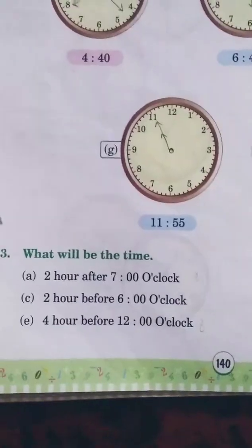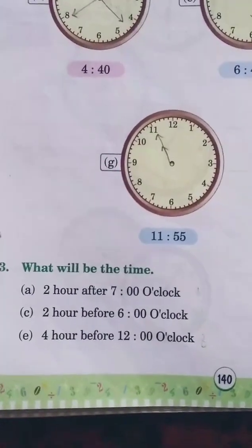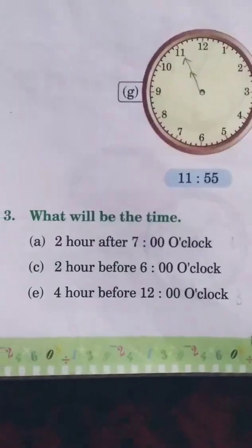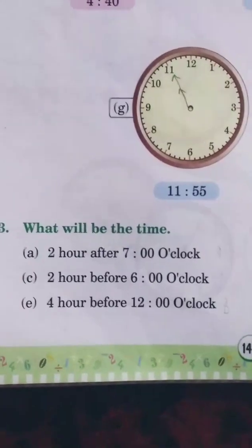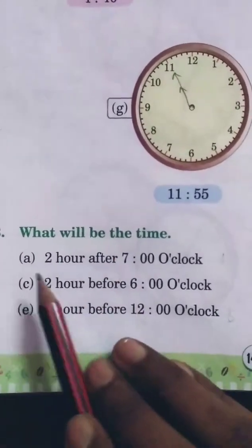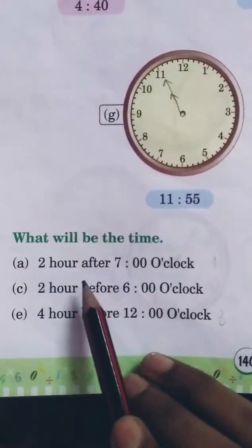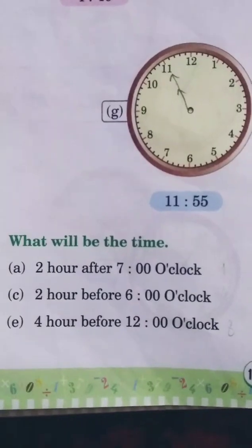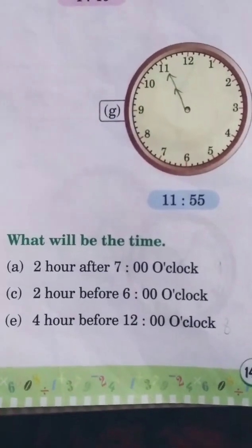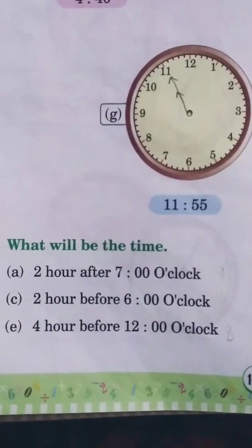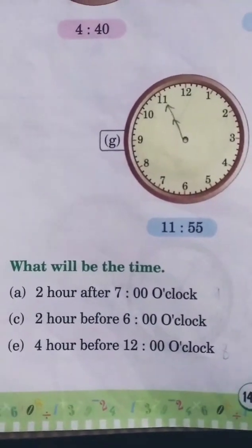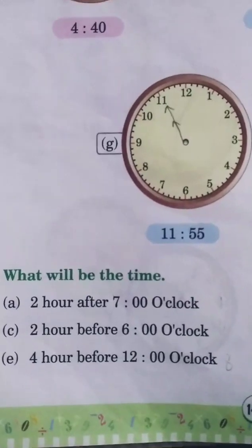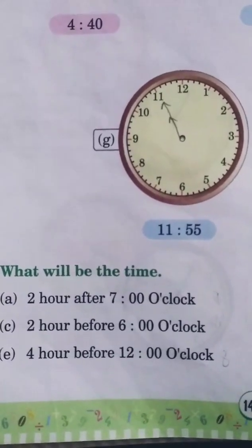Question 3: What will be the time? Question A: 2 hours after 7 o'clock. Add 2 more to 7 — that gives 8, 9 — so the answer is 9 o'clock.